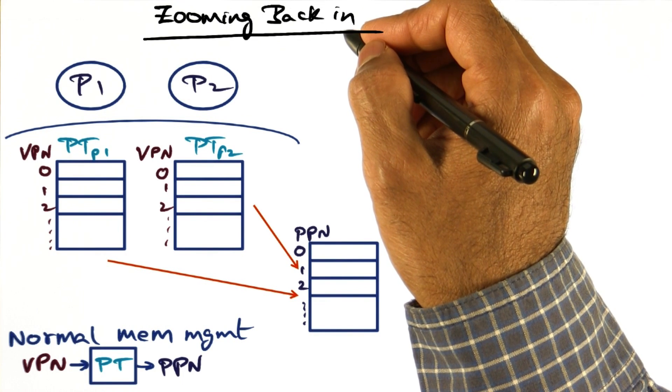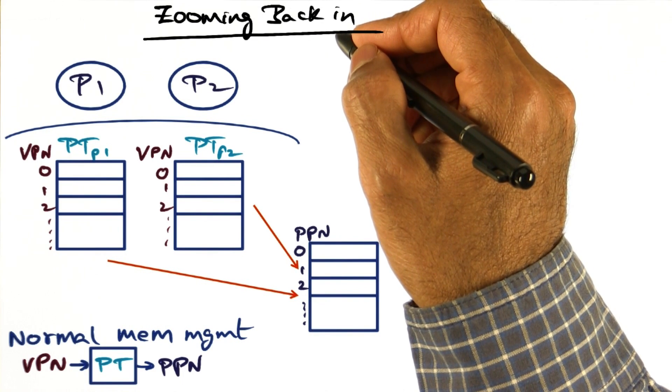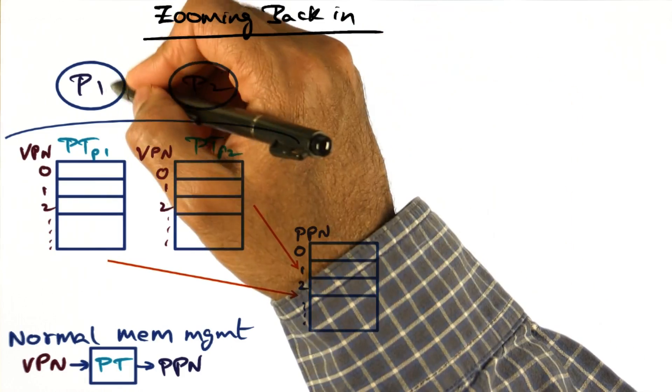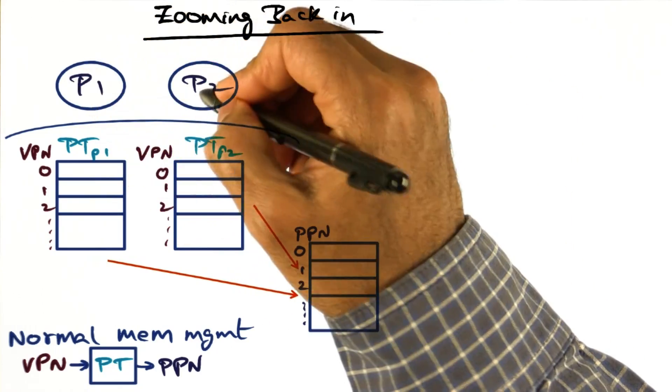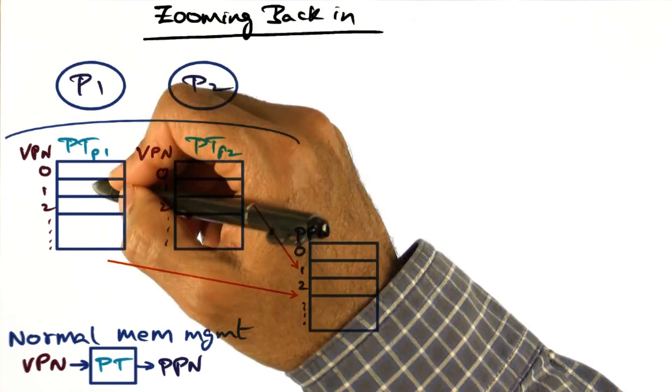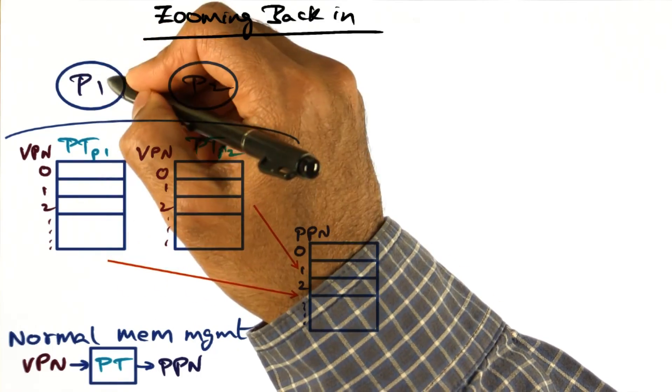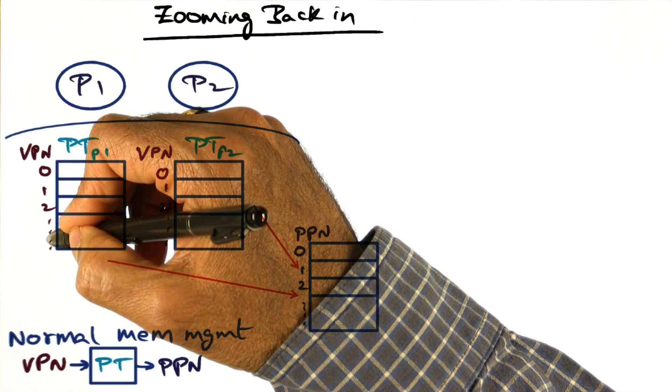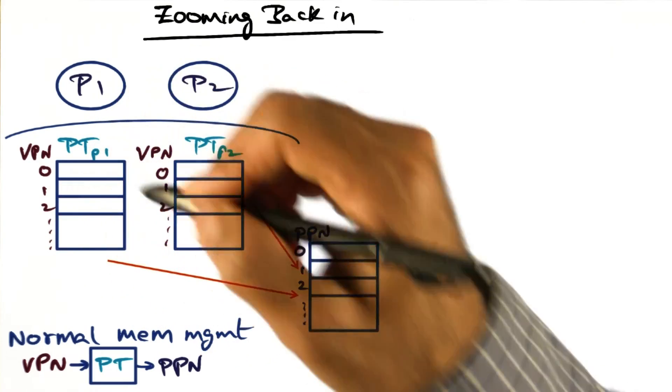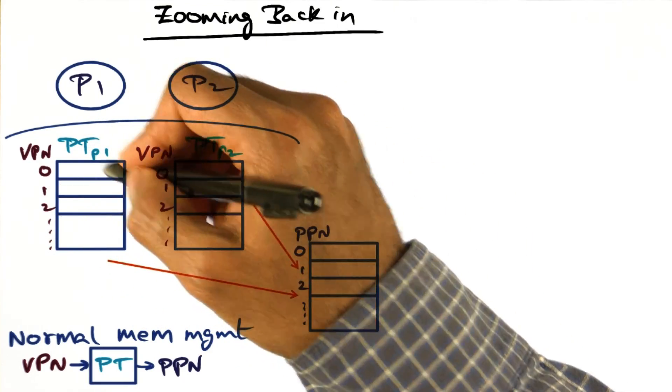Zooming back in to what is going on within a given operating system, we already know that the process address space for an application is an illusion in the sense that the virtual memory space of this process is contiguous, but in terms of physical memory, they are not contiguous.